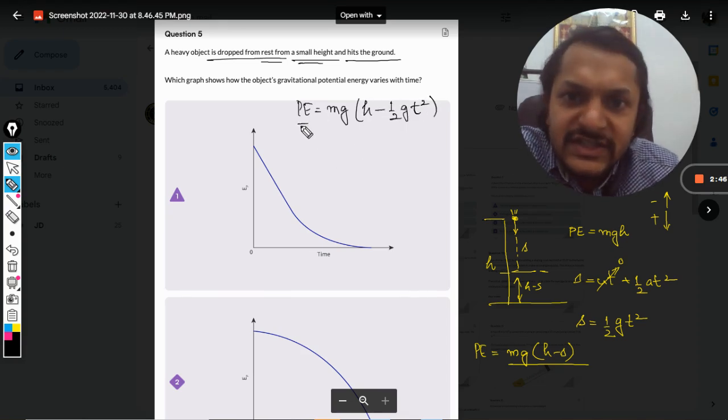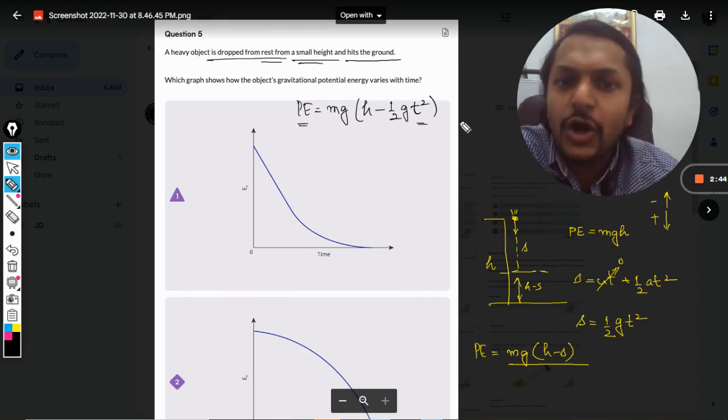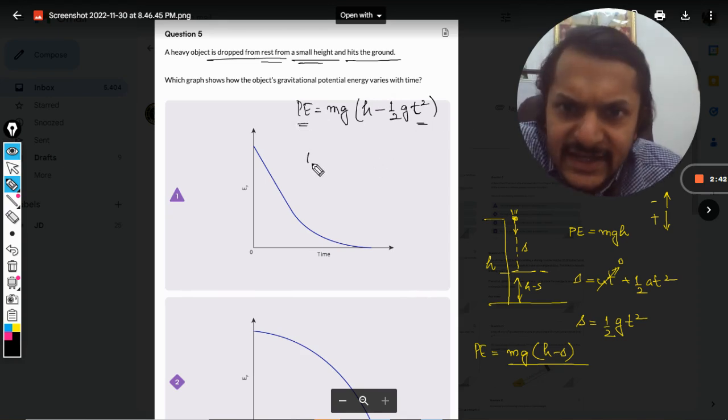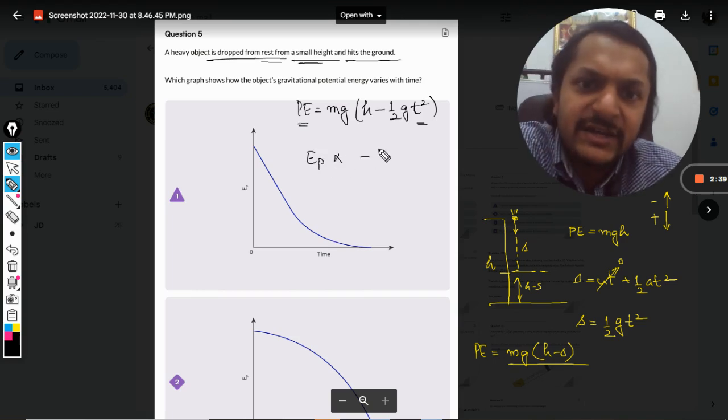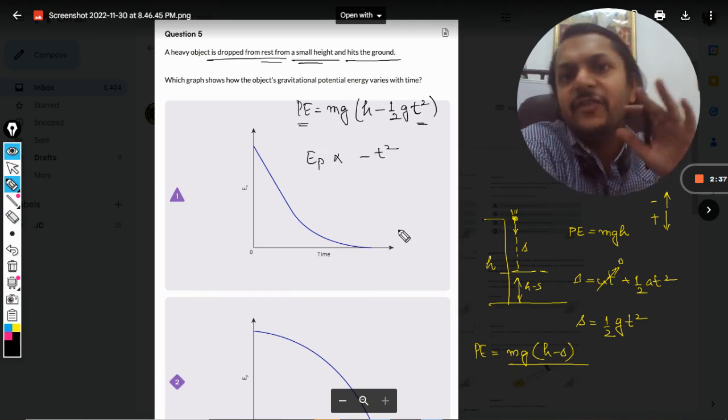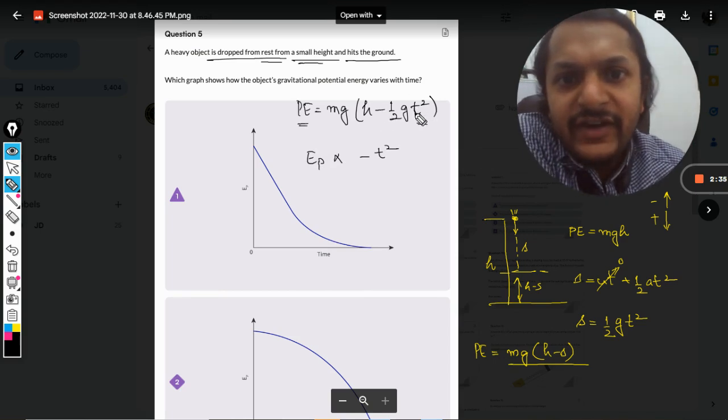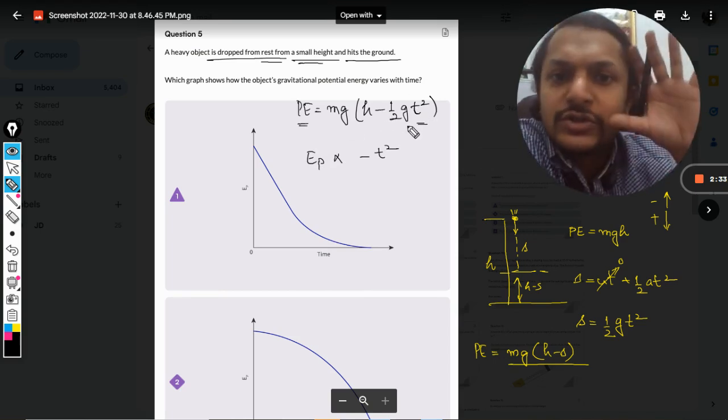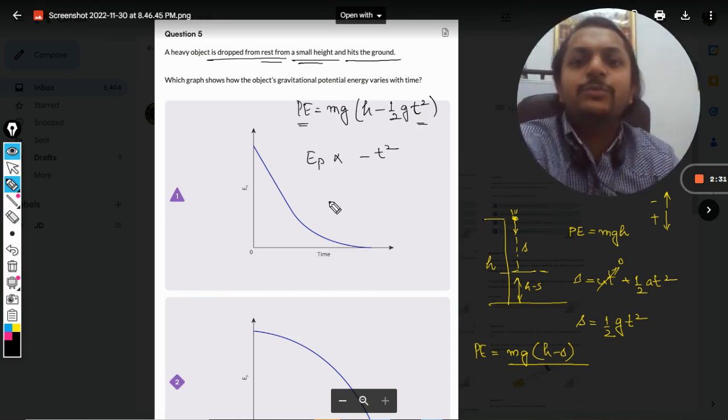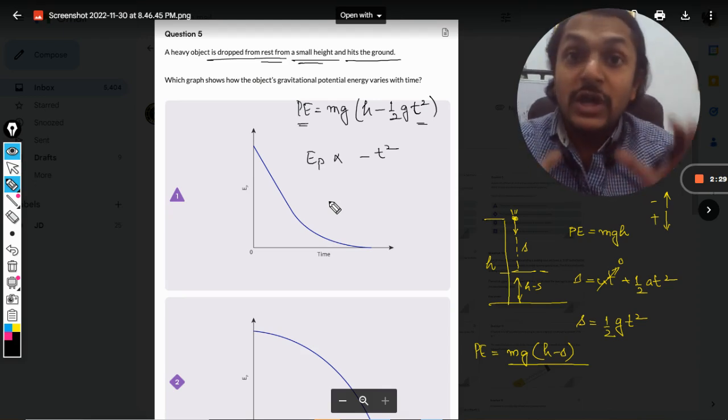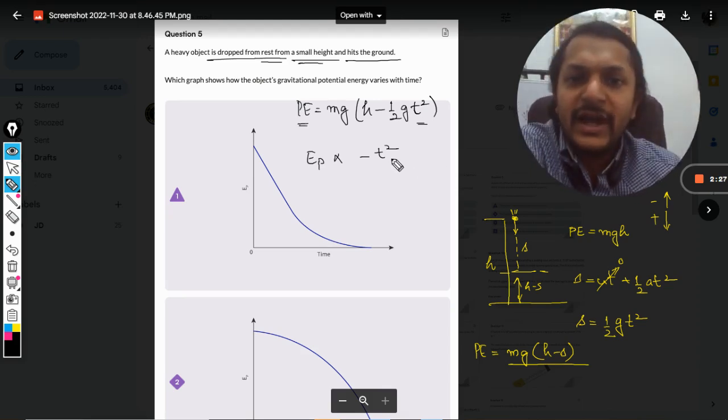This is the potential energy as a function of time. So I can say that EP, the potential energy, is directly proportional to negative of T squared. Everything else is constant, so we need not touch them. We will just say that the potential energy is directly proportional to negative of T squared.